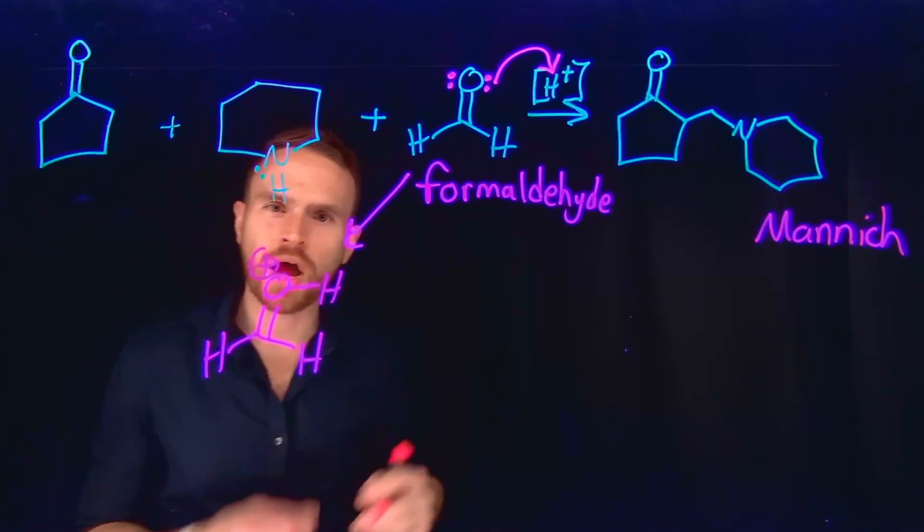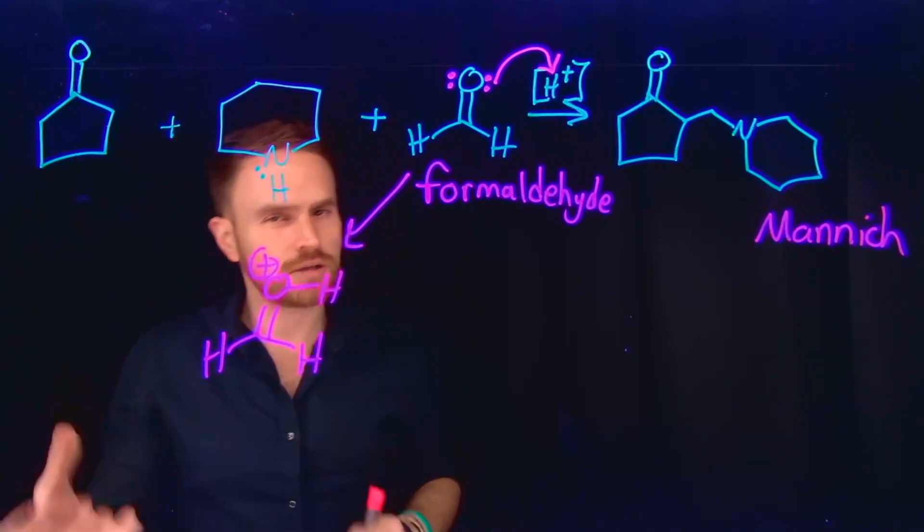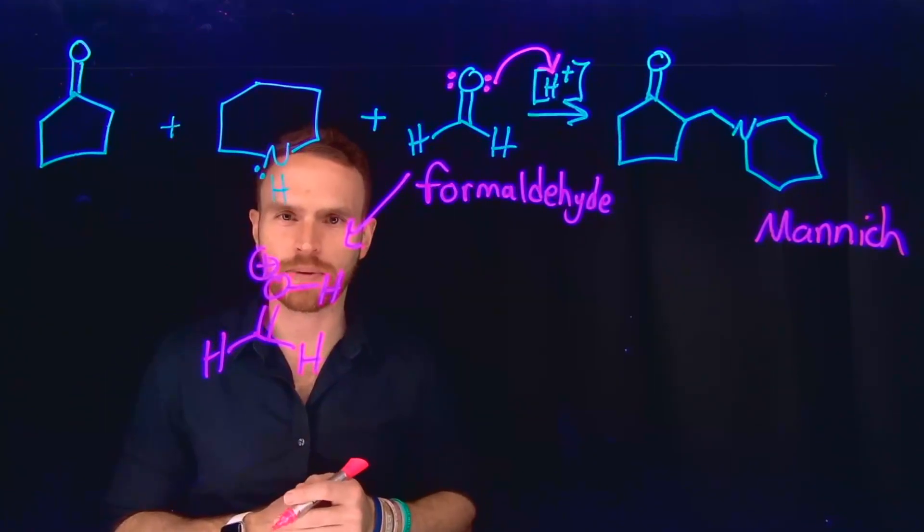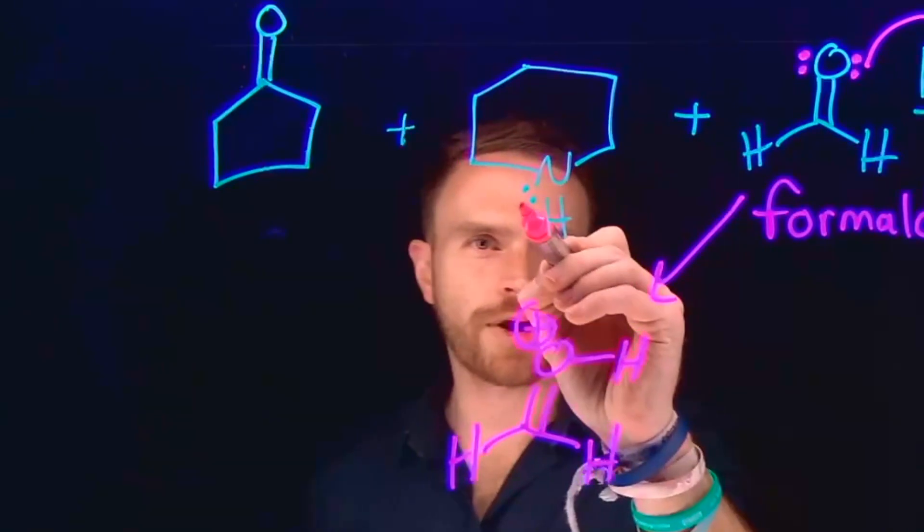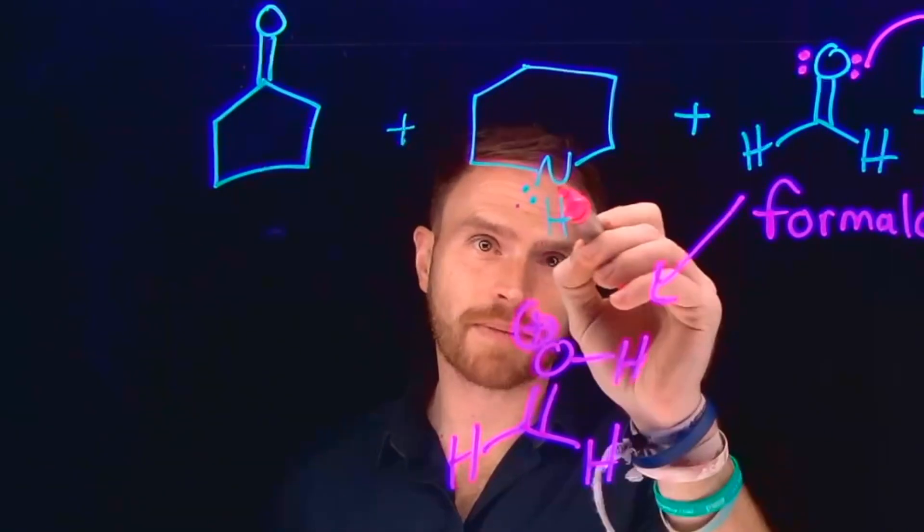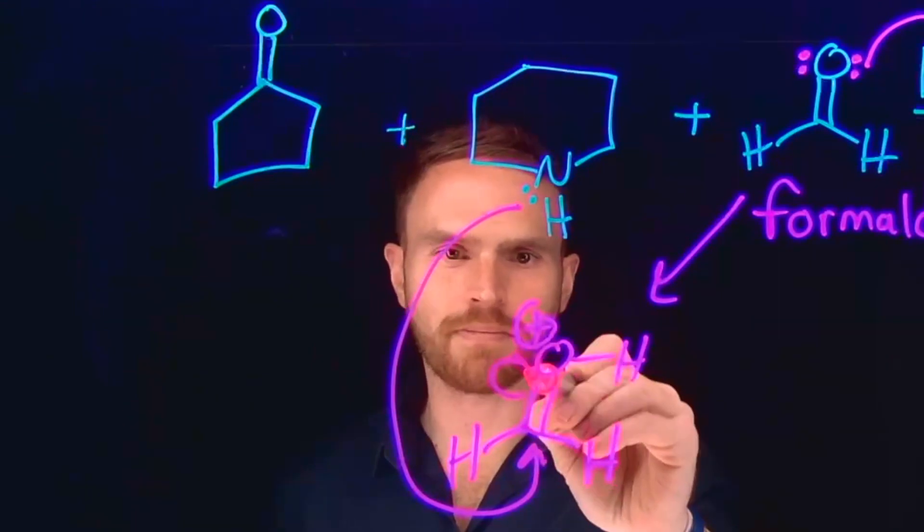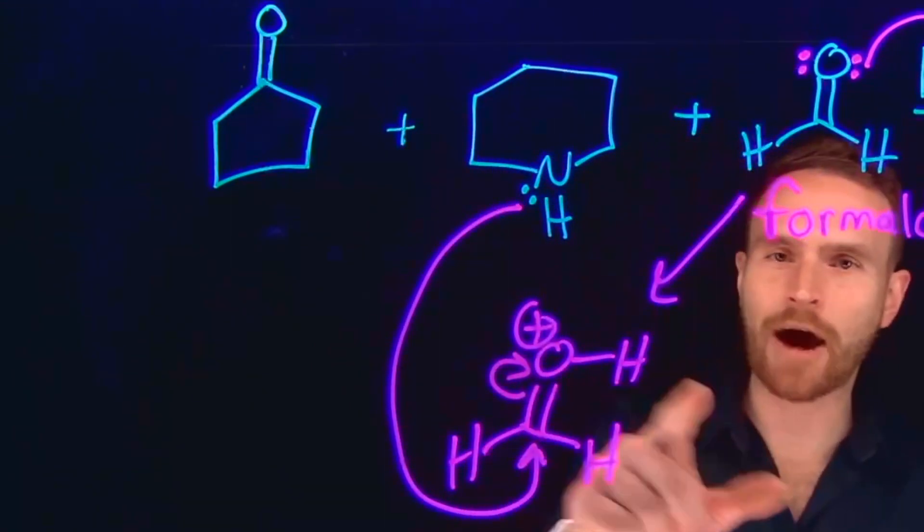So this carbon position is now ready and willing to accept sometimes weaker nucleophiles than might normally attack this carbonyl carbon position, which is what's going to happen next where piperidine, which is the six-membered ring with the nitrogen on it will come and attack this carbonyl carbon position, moving up these pi electrons and leaving us with an alcohol.